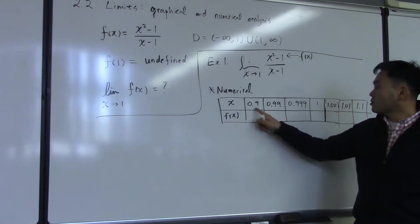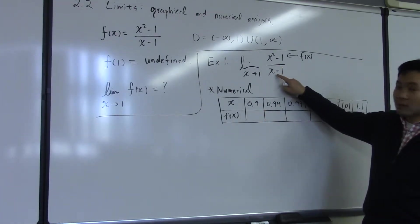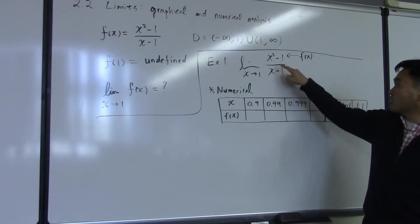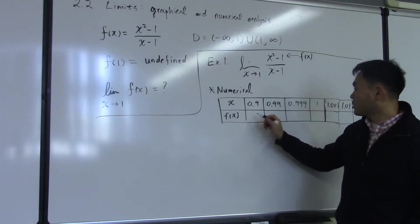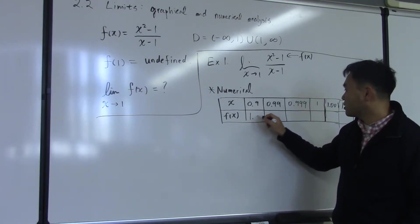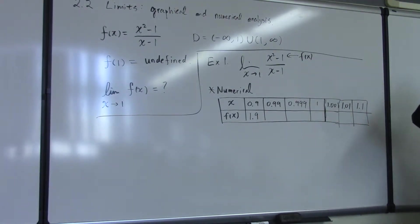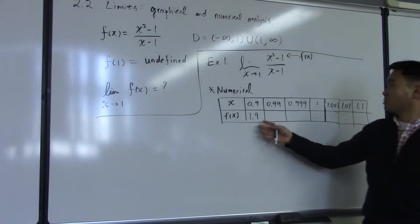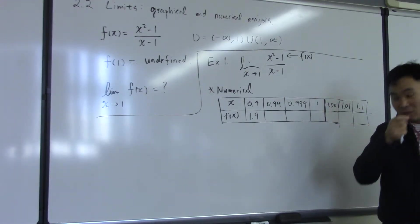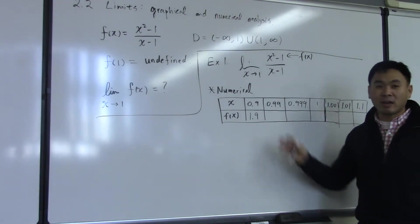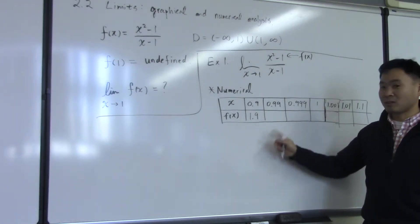Okay. So let's plug in 0.9 into this function, and if you plug in 0.9 into that function, you get 1.9 as your result. I mean, ideally we should be punching this into a calculator and do all the calculation, but without having to use a calculator, I just know that that should be the answer.